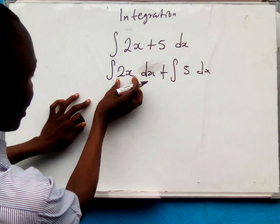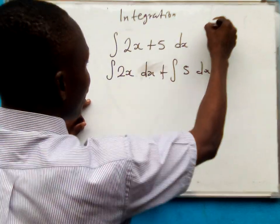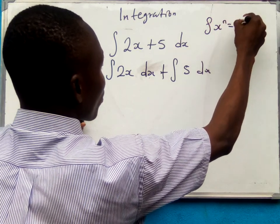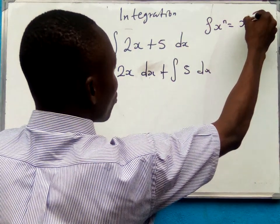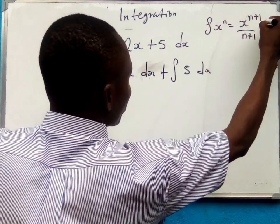Now if you integrate this, remember the formula of integration. When you have anti-derivatives of x^n, it is equal to x^(n+1) all over n plus 1. Don't forget your integration constant c.